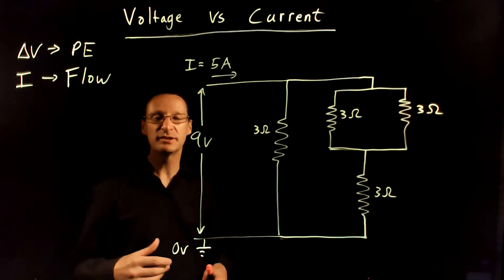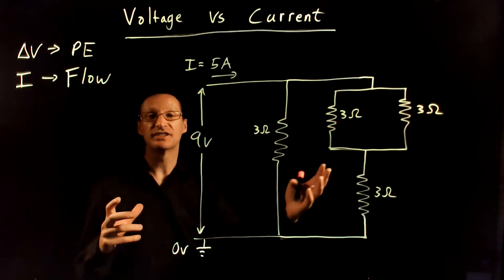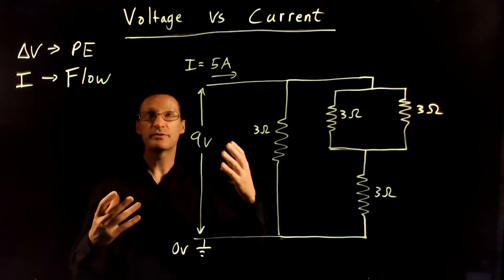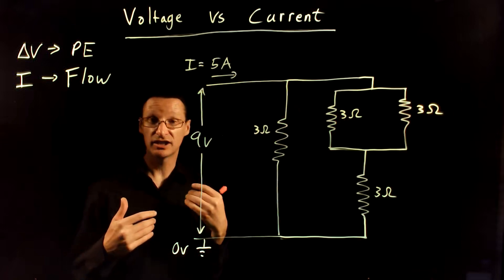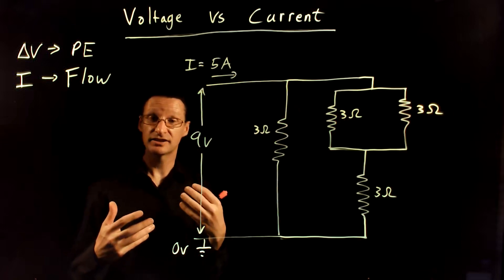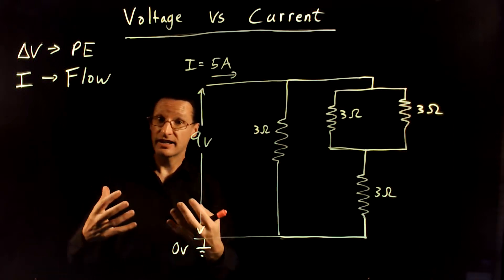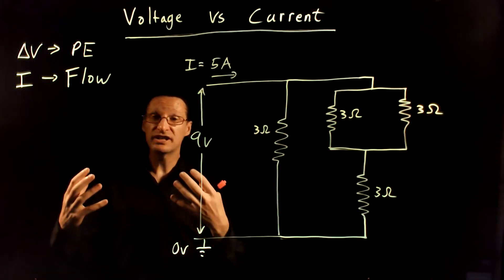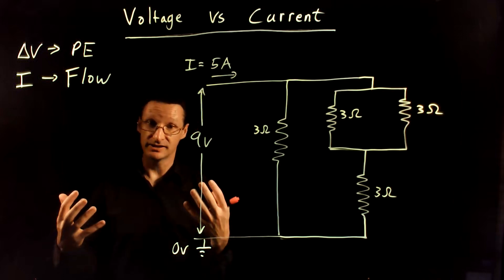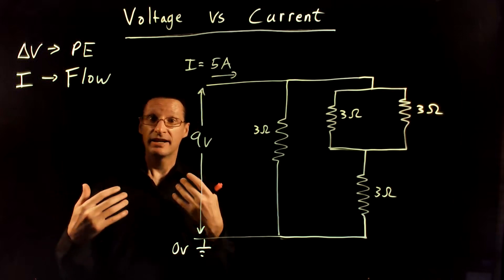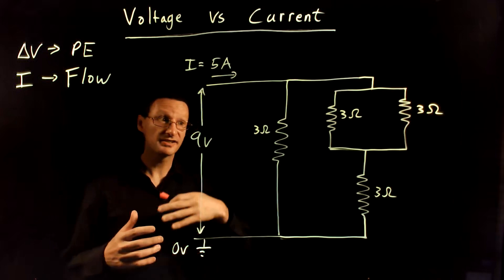Hey there, awesome physics students. I wanted to do an example circuit that demonstrates the difference between voltage and current in a circuit. It's very important to understand how voltage and current behave in circuits, and to do that we're going to lean heavily on a mental model here.